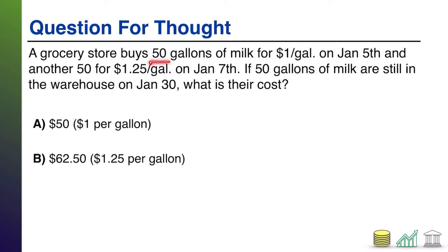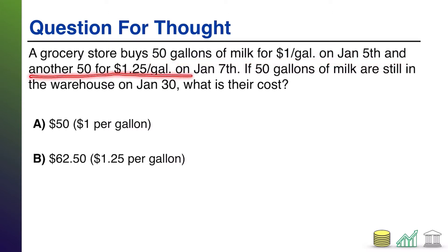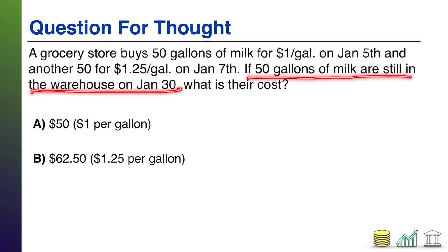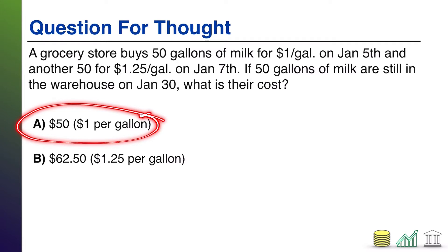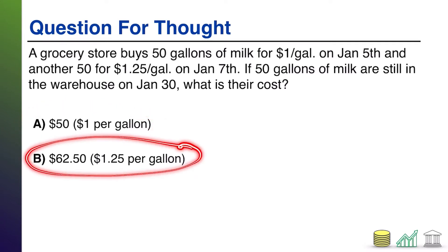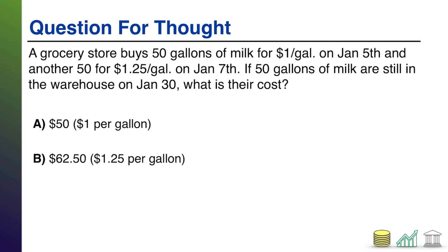If a grocery store buys 50 gallons of milk for $1 per gallon on January 5th, and then another 50 gallons for $1.25 per gallon on January 7th, but only 50 of those gallons are still in the warehouse on January 30th, what is the cost of those goods in the warehouse? They bought 100 gallons total, but some were bought at $1 and some at $1.25. Half were sold and half are still left. Are the 50 gallons still left worth $50 — $1 per gallon — or are they worth $62.50 — $1.25 per gallon — on your balance sheet?